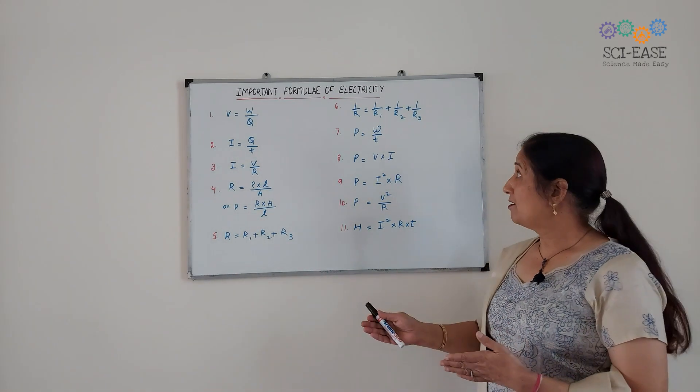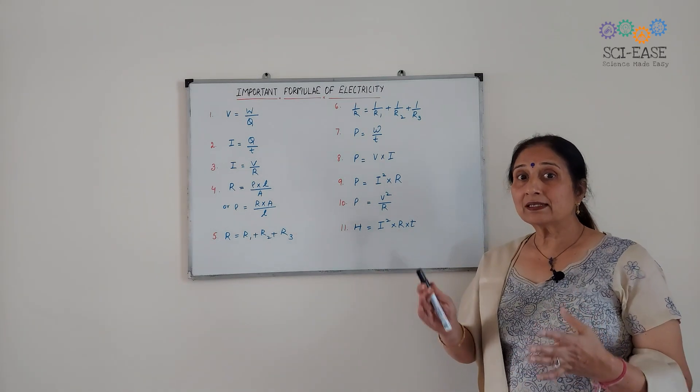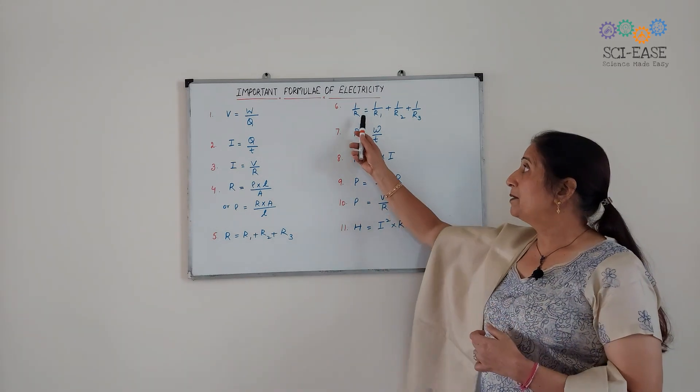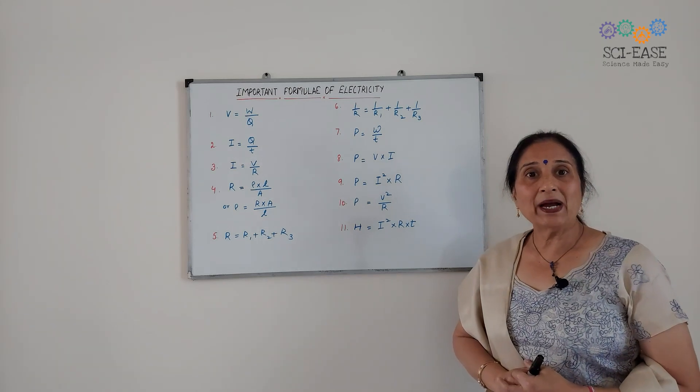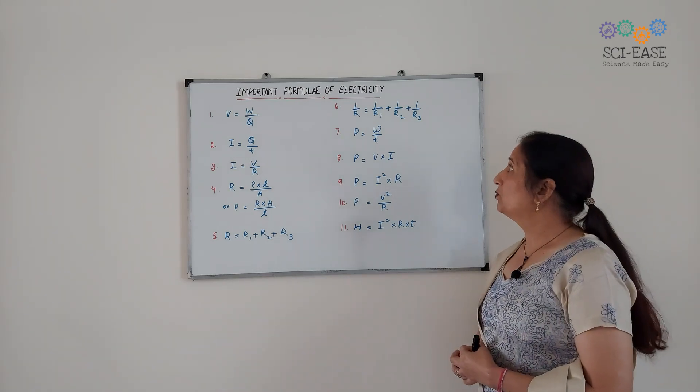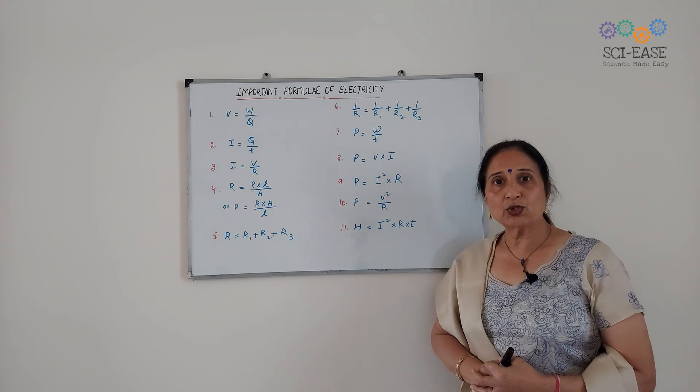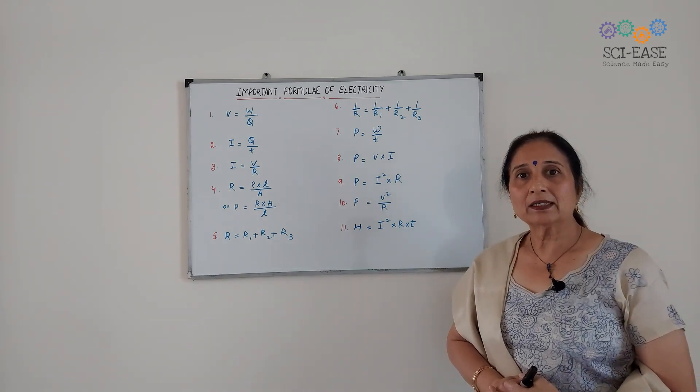And when we calculate the resultant resistance in parallel, then 1 by R equals 1 by R1 plus 1 by R2 plus 1 by R3.